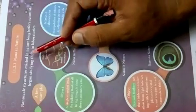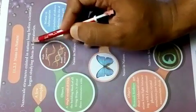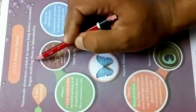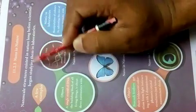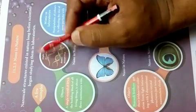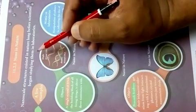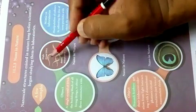Now let's learn how nanotechnology is useful in nature. Nanoscale structures exist in nature long before scientists began studying them in laboratories. That means nature already has nanotechnology - there are nanostructures there. Let's see some examples, even before human beings made them.